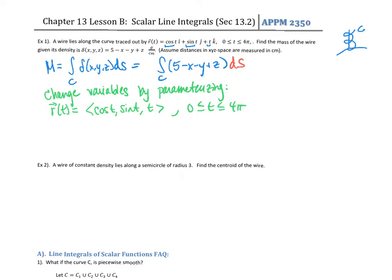So we can find, basically what we're trying to do is rewrite the integrand now and then rewrite ds. In my new coordinates, t is going to be going from 0 to 4π, and then we can replace the integrand. This will be 5 minus x, in this case is cosine t, y is sine t, and z is t.